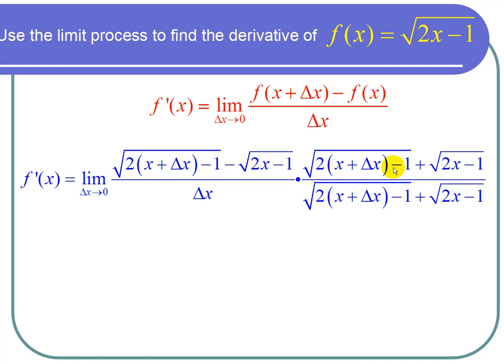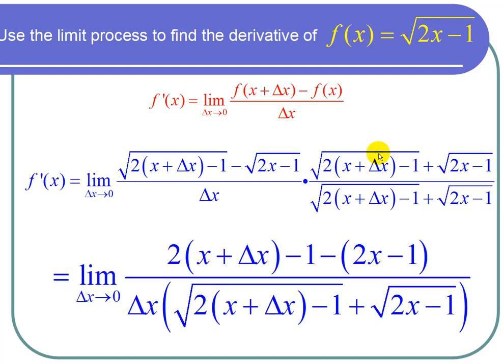And what I get up on top is 2 times x plus delta x minus 1, that's the inside of the first root, and then minus the inside of the second root, 2x minus 1.